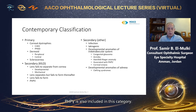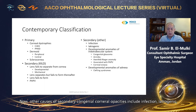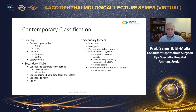PHPV is also included in this category. Other causes of secondary congenital corneal opacities include infection, iatrogenic, developmental anomalies of the iridotrabecular system, and developmental anomalies of the adnexa.